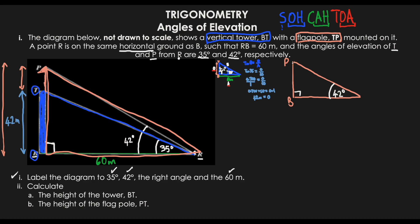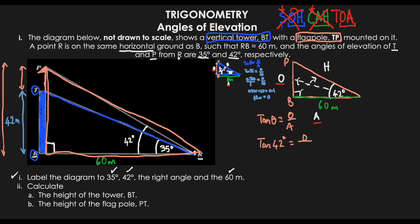In this outer triangle, we have the right angle, the 60-meter adjacent side, and the 42-degree angle. The hypotenuse is opposite the right angle; the opposite is what we're calculating — the overall height BP; and the adjacent is 60 meters. Does sine use opposite and adjacent? No, it uses opposite and hypotenuse. Does cosine? No, it uses adjacent and hypotenuse. The only ratio using both opposite and adjacent is tan. So we use tan once again.